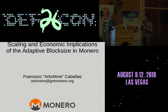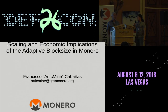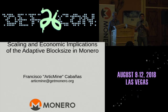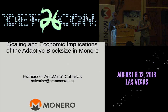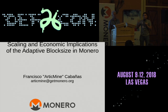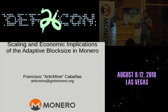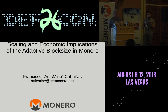Up next we've got ArcticMind. He's going to be talking about scaling and economic implications of the adaptive block size in Monero. Basically he's going to be talking about Monero's adaptive block size — what does that mean, what does it mean for the economies of scale, and all that different type of stuff. He's a smart guy. This is a Monero core team member.